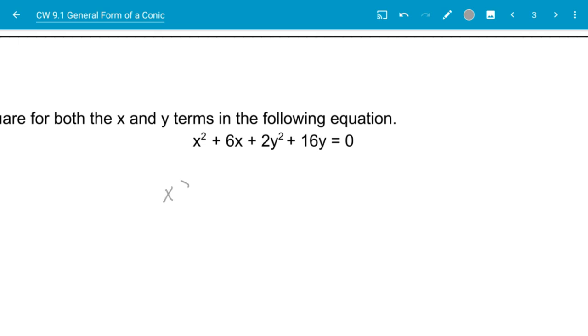I'm going to take this and say x squared plus 6x plus what number to complete the square. Now over here, I have a 2 in front of my y, and I got to get my coefficient of y squared to be 1.